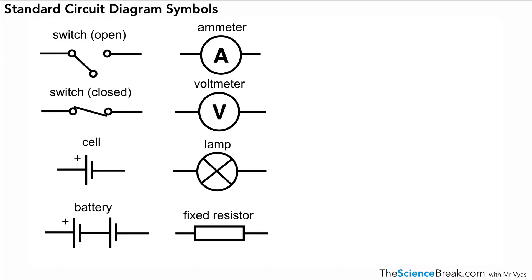Here is what we call a fixed resistor. A resistor will reduce current in a circuit, and if it has a fixed value we draw it like this.